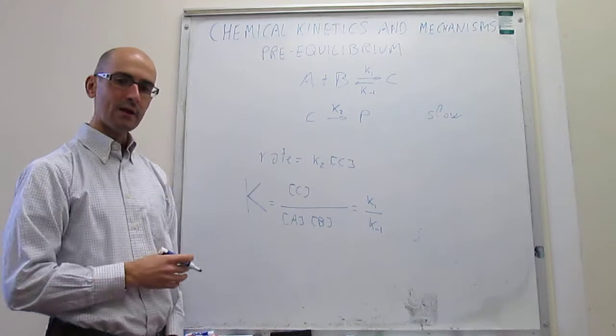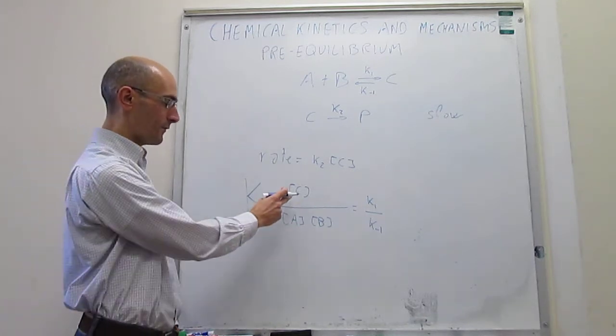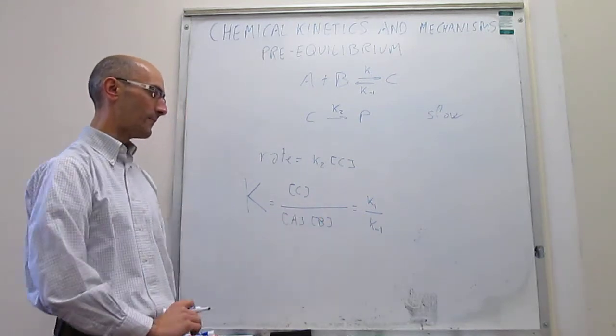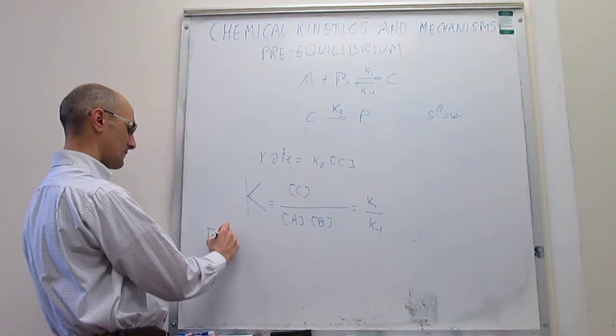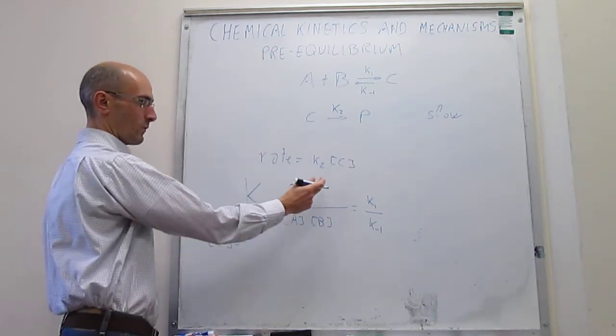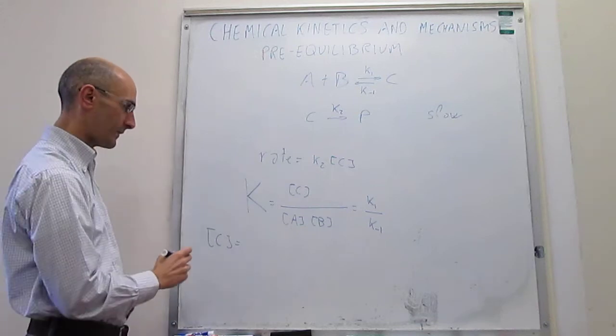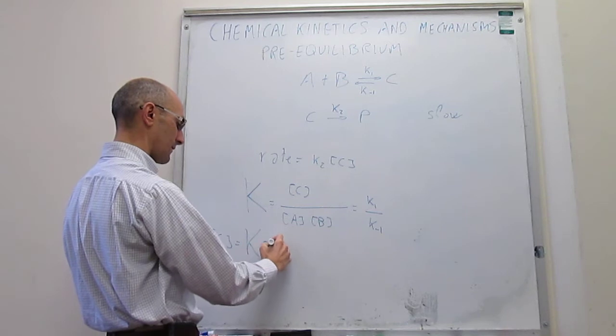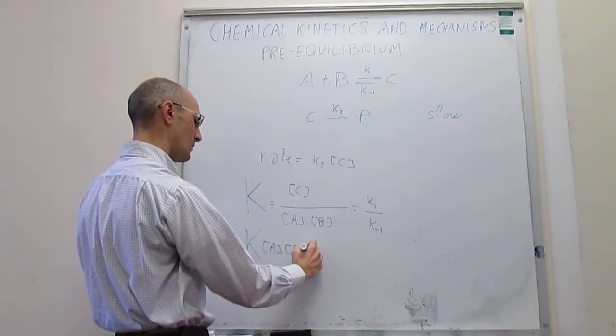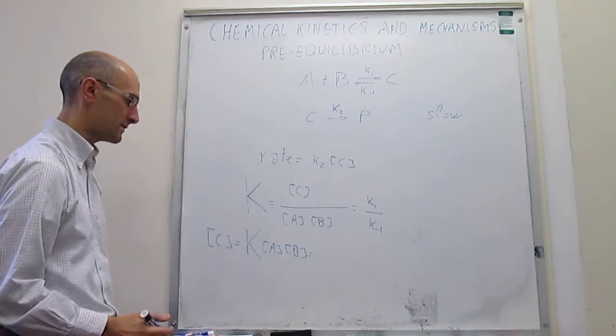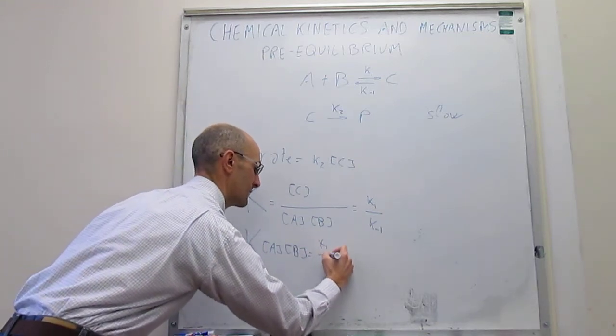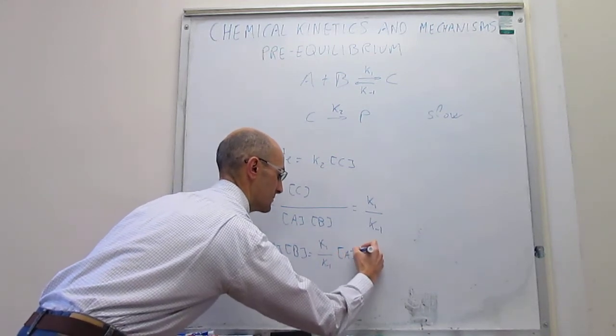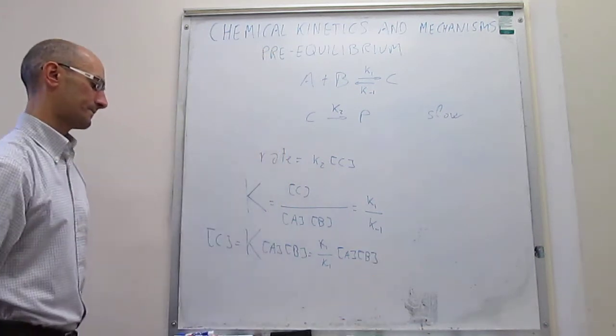This is perfect because now we have a situation where we can actually solve for the concentration of C as a function of the concentration of reagents. The concentration of C, which is what we want to solve for to get a complete rate law, would be equal to the equilibrium constant K times the concentration of A times the concentration of B. Or, using the rate constants, this will be equal to K sub 1 over K minus 1, concentration of A, concentration of B.